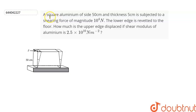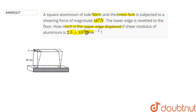The question is: a square aluminum slab of side 50 cm and thickness 5 cm is subjected to a shearing force of magnitude 10 raised to the power 4 Newton. The lower edge is riveted to the floor. How much is the upper edge displaced if the shearing modulus of aluminum is 2.5 into 10 raised to the power 10 Newton per meter square?